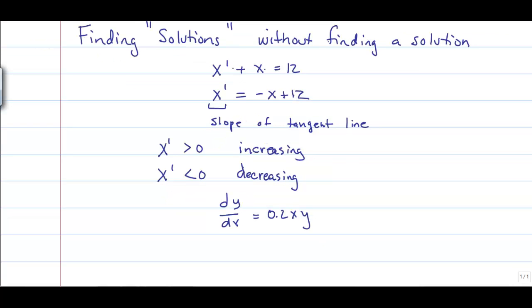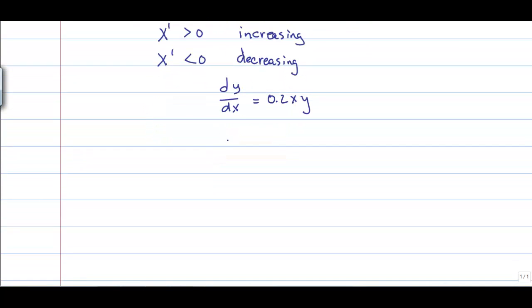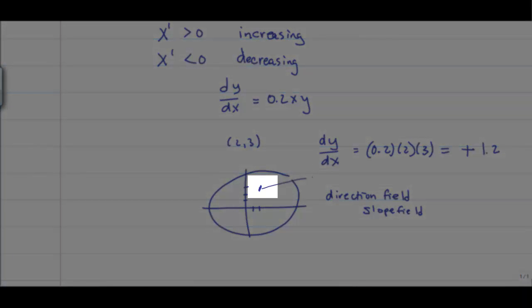Here's another differential equation: dy/dx equals 0.2xy. Again, if dy/dx is positive, it's going to be an increasing solution, and if dy/dx is negative, it's going to be a decreasing solution. For example, at the point (2, 3), plugging into dy/dx gives a positive answer — a slope of about positive 1. If we fill the entire xy region with these little slopes, this is called a direction field or slope field. Each little line is called a lineal element.